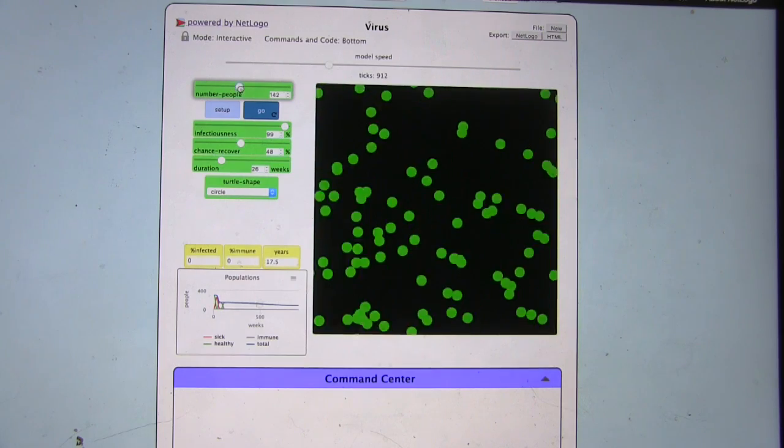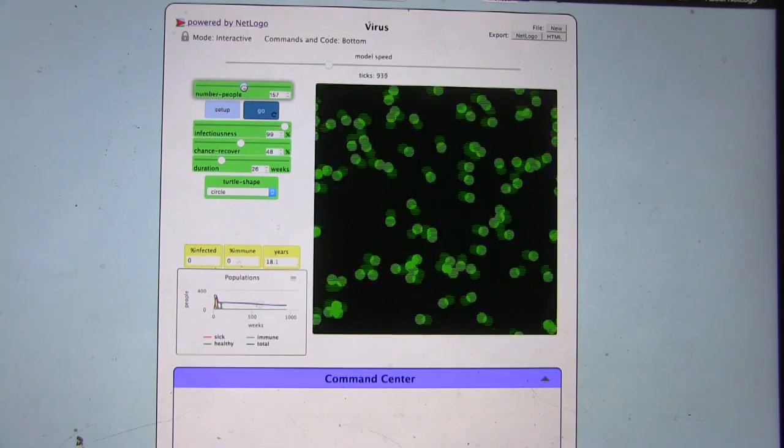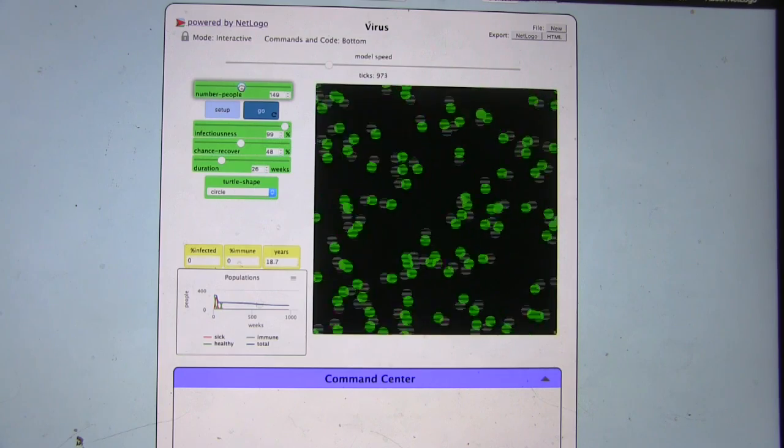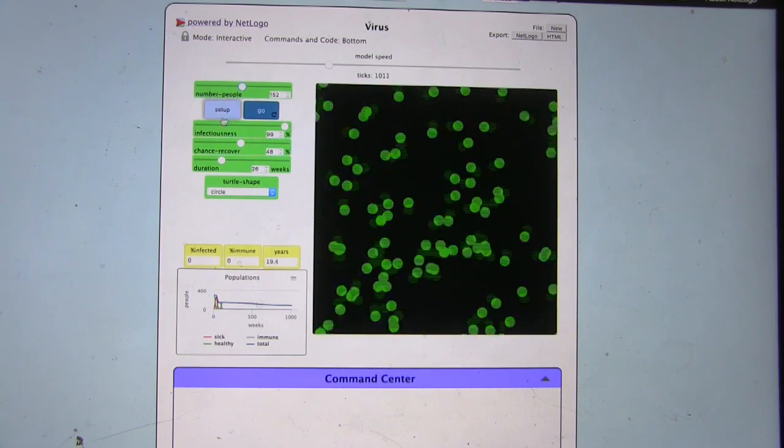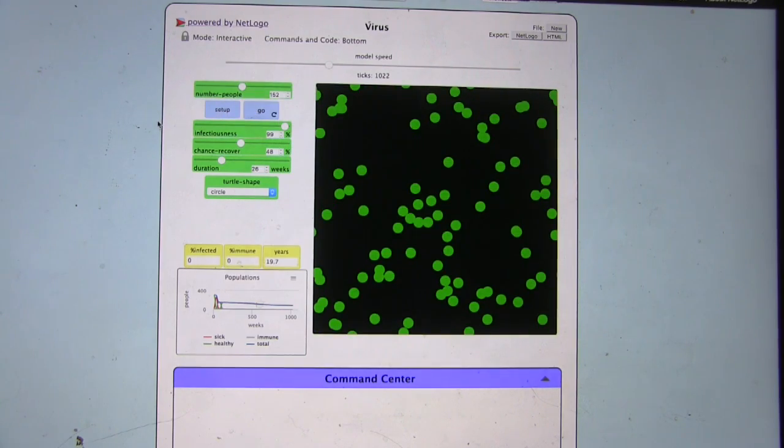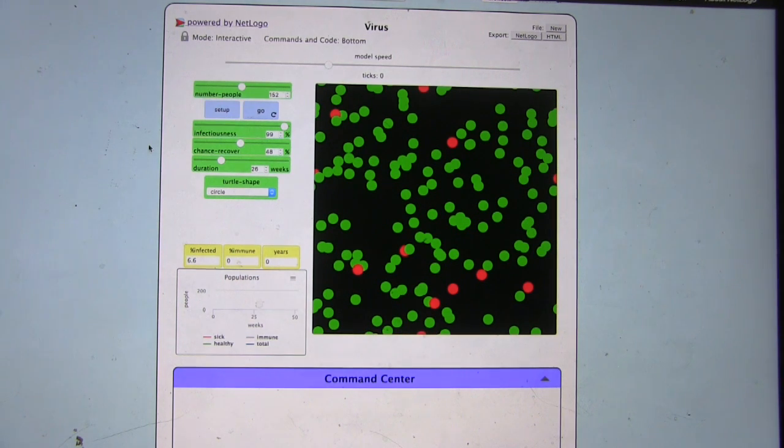So what if I instead start with only 150 people? What do you think is going to happen? I mean, it might be less, maybe less percentage of people die overall. Maybe because the people aren't as closely packed together.